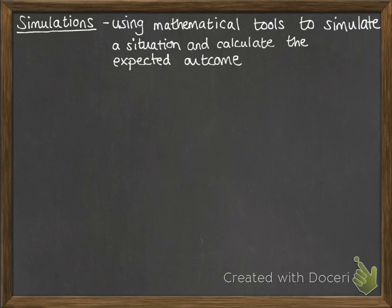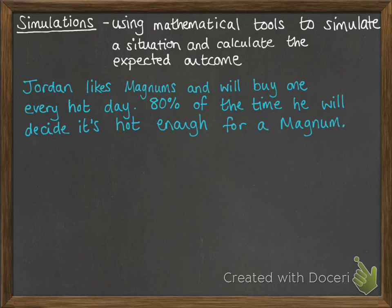This is much easier to explain in the context of a problem, something that you're trying to simulate, so we're going to use this one. Jordan likes magnums — the ice creams — and will buy one every hot day. 80% of the time he will decide it's hot enough for a magnum.